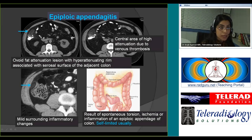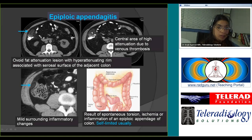This is a finger-like fat attenuation lesion with a hyperattenuating rim associated with the serosal surface of the descending colon. Notice there is mild eccentric wall thickening of the adjacent colon. You may also see a central area of high attenuation — that's the thrombosed vein as a result of torsion or primary thrombosis — with adjacent fat inflammatory changes.